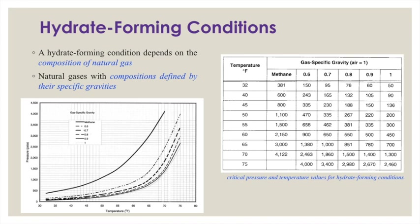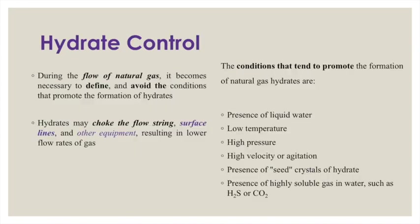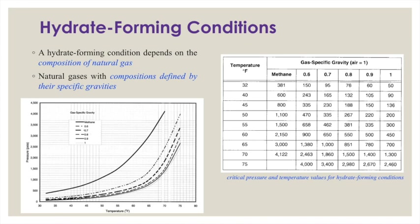There are different pressure, temperature, agitation, and other modes responsible for promoting hydrate formation. Going deeper, hydrate formation conditions also depend on the composition of natural gas — represented here by different specific gravities. If you have different specific gravities of natural gas, the composition of the gas is also varying. Pure methane has a specific gravity of approximately 0.57 to 0.6.